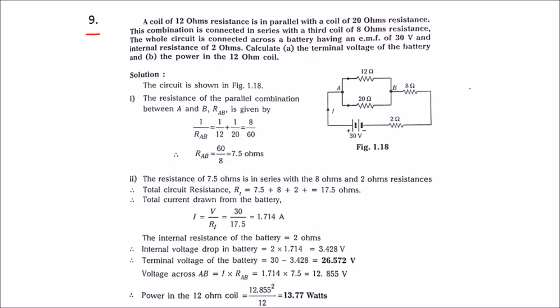This is the circuit where the 12 ohm and 20 ohm resistances are in parallel, and this combination is in series with the 8 ohm resistor. The 2 ohm is the internal resistance of the battery with a supply voltage of 30 volts. This is the current I.